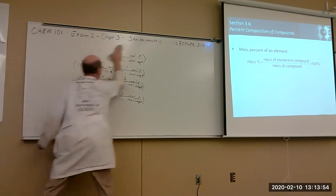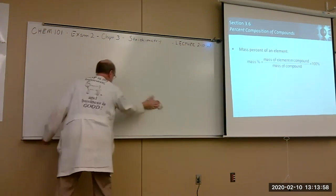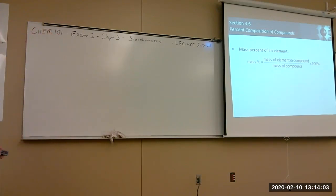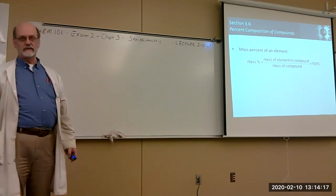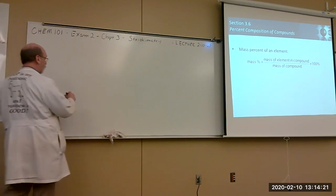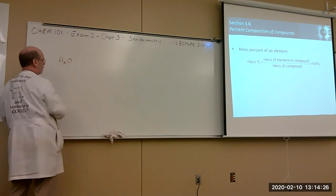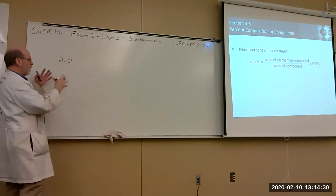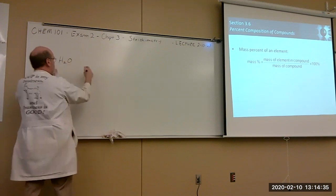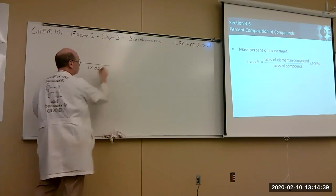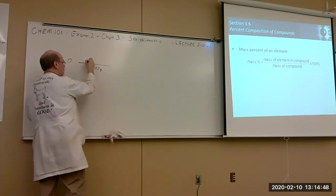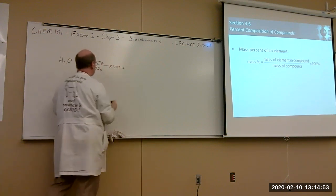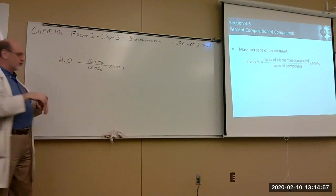Here's an important skill in stoichiometry: understanding mass percent of an element in a compound. The mass percent is simply the mass of the element in the compound divided by the total mass of the compound, times 100. For water, assume you have one mole — the total mass is 18.02 grams. One mole of oxygen weighs 16.00 grams, so oxygen is 16.00/18.02 × 100 = 88.8% by mass.